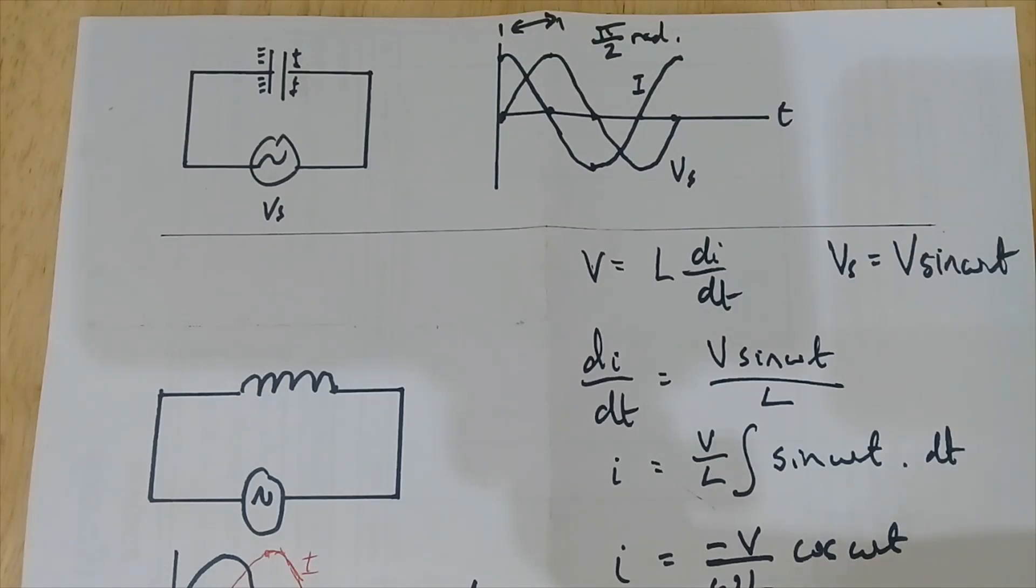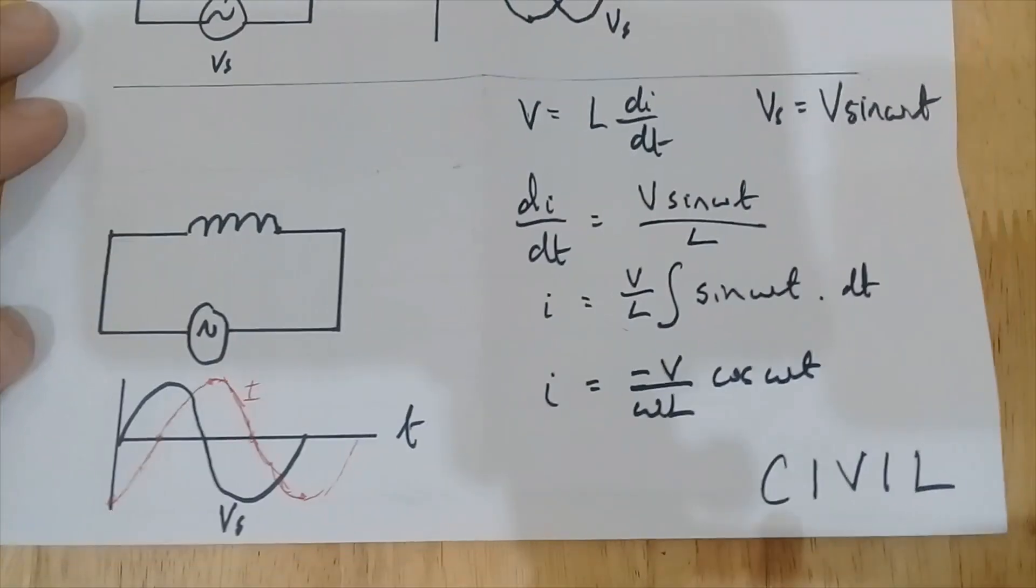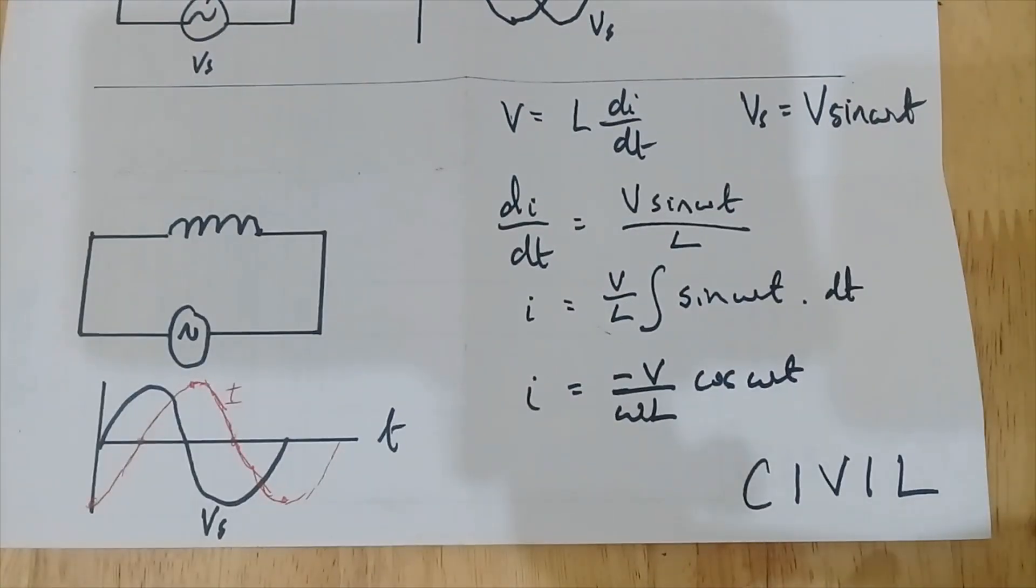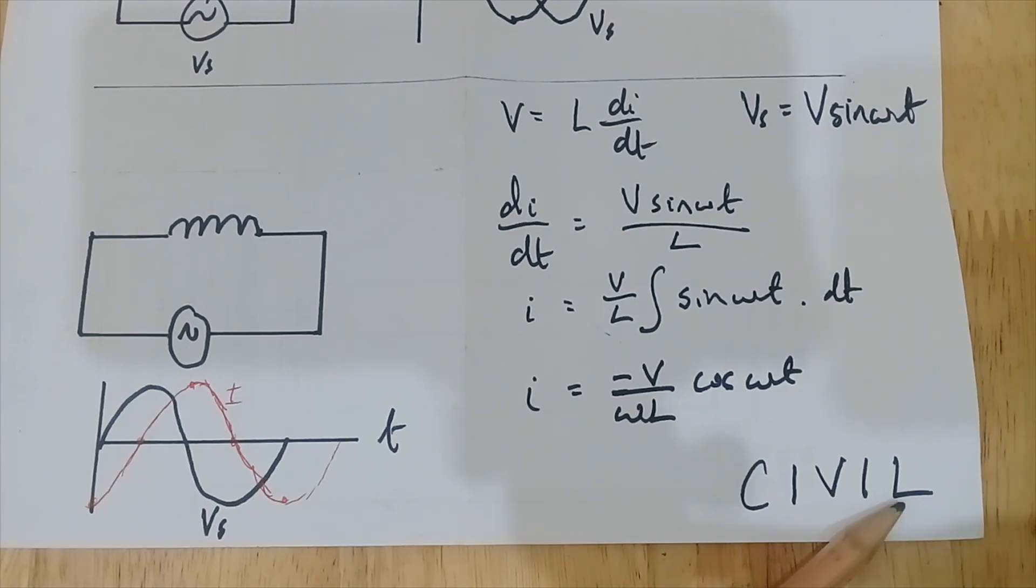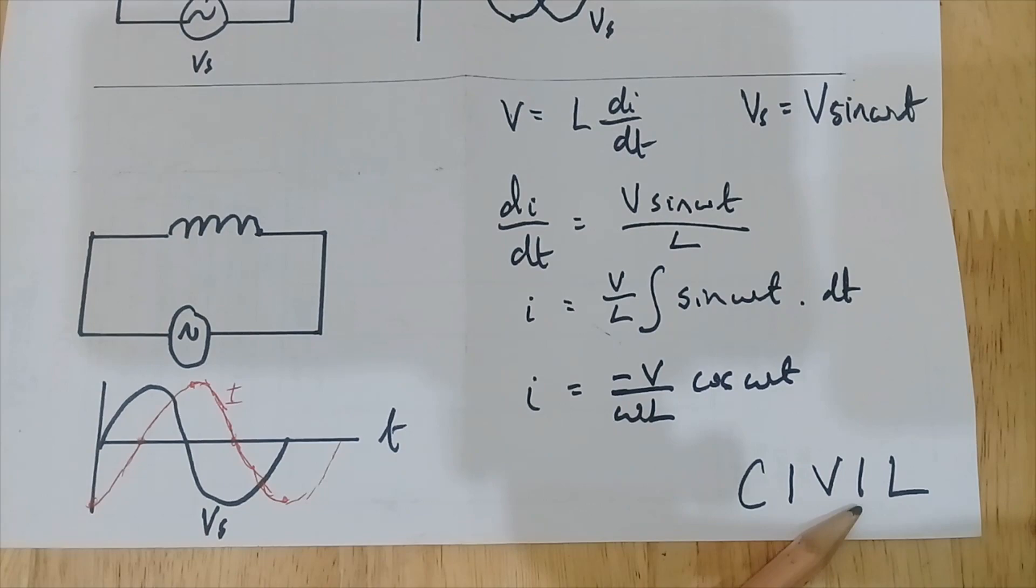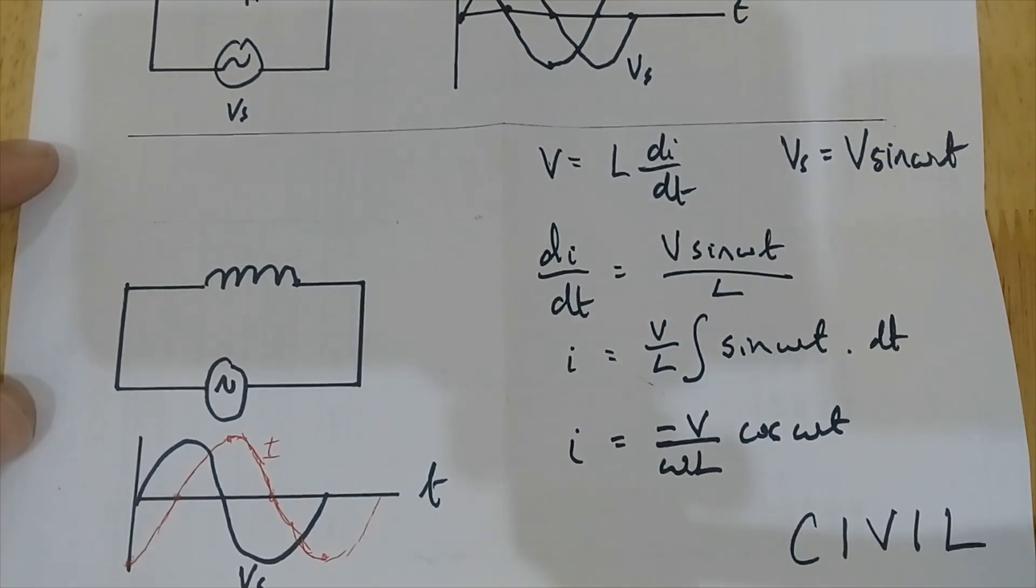Conversely, in an inductor there's a phase difference again, but this time the voltage leads the current. They told us a way to remember that with this mnemonic called CIVIL. We've got the C of the capacitor, the current leads the voltage, and the L which represents the inductor, the voltage leads the current.